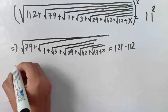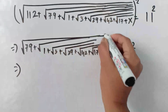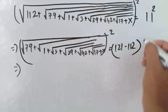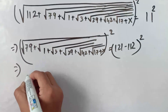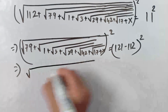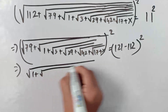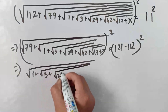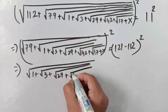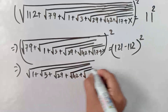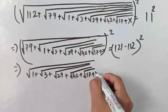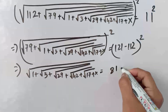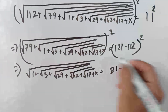This 112 comes to this side. So again we square both sides of this equation. It comes: square root of 1 plus square root of 3 plus square root of 29 plus square root of 42 plus square root of 17 plus x, equals to 81 minus 79.